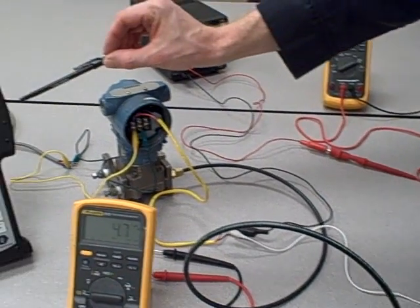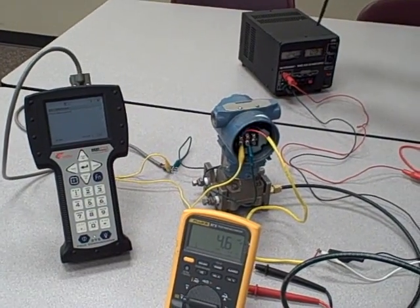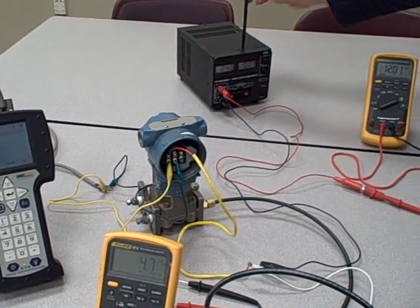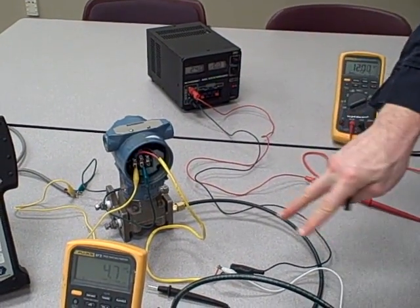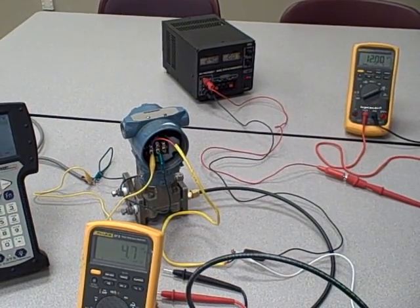Recall that the HART data signals are exactly that, AC voltages. So with the filter capacitors here on the power supply being effectively in parallel now directly with the transmitter, it squelches any attempt to communicate in digital form.